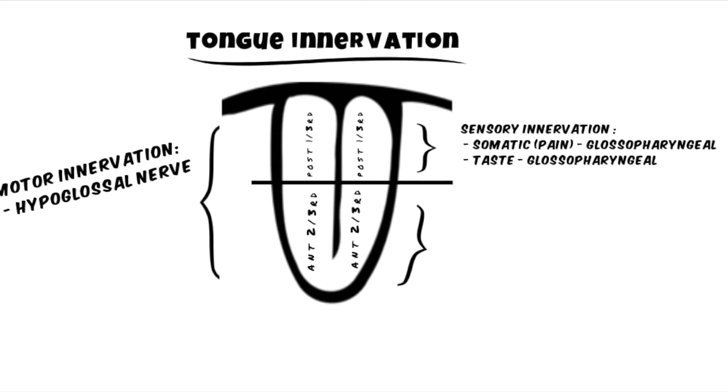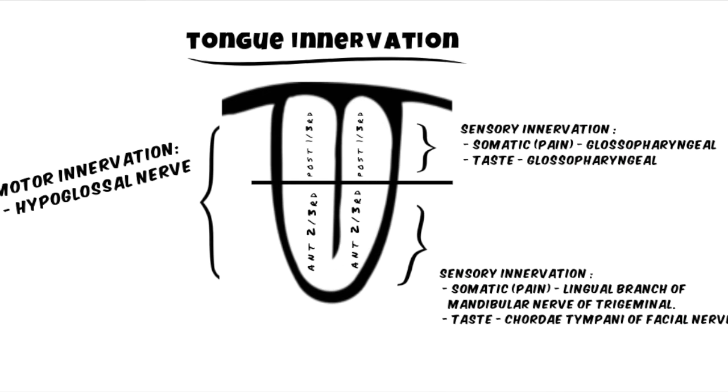The sensory part of the anterior two-thirds: the somatic sensation is carried by the lingual branch of the mandibular nerve of cranial nerve 5, which is the trigeminal nerve, and the taste sensation is carried by the chorda tympani of the facial nerve.